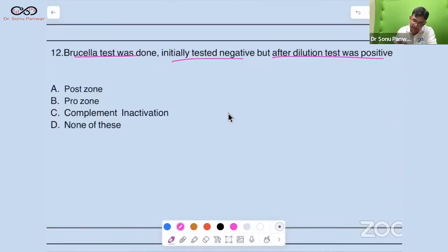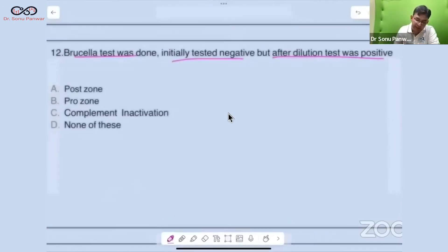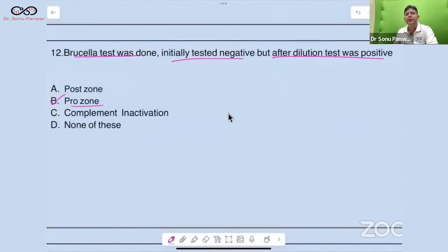The Brucella test was done, initially tested negative but after dilution test was positive. Which phenomenon is there? The answer is B. This is prozone phenomenon. Prozone phenomenon is antibody excess.